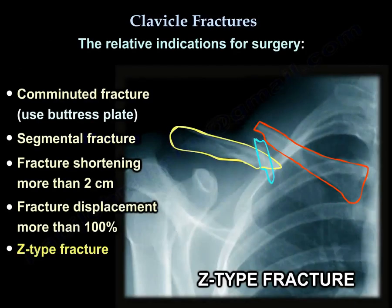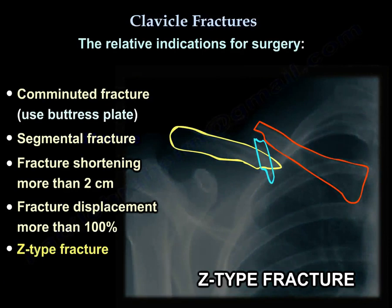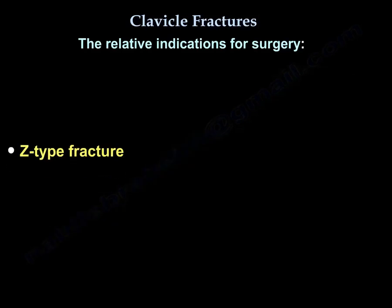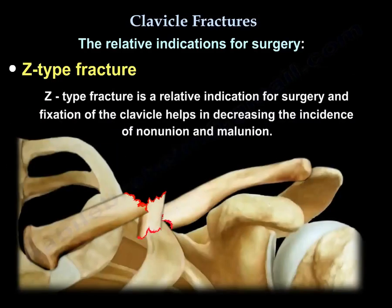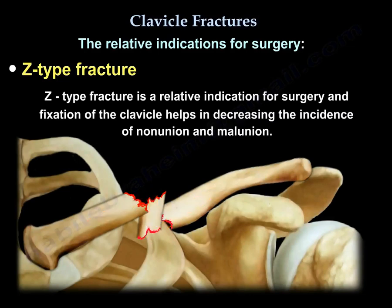There are some relative indications for surgery, such as comminuted fracture — for which a buttress plate is used — segmental fracture, fracture shortening more than 2 cm, fracture displacement more than 100%, and a Z-type fracture. The Z fracture is a relative indication for surgery, and fixation of the clavicle helps decrease the incidence of nonunion and malunion.